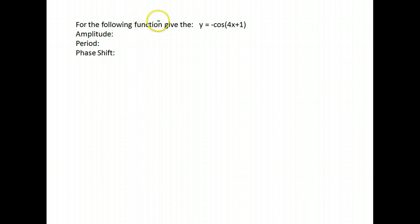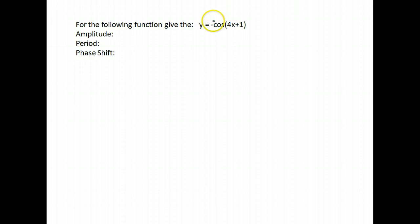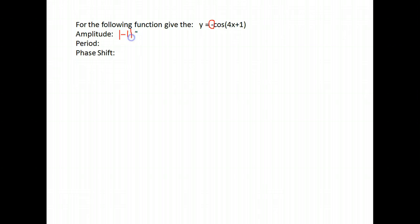Now find the amplitude, period, and phase shift of negative cosine(4x + 1). To find the amplitude, you take the number directly in front of your cosine or sine and do the absolute value of that. Our number is negative 1, so the absolute value of negative 1 is just 1. We have an amplitude of 1.